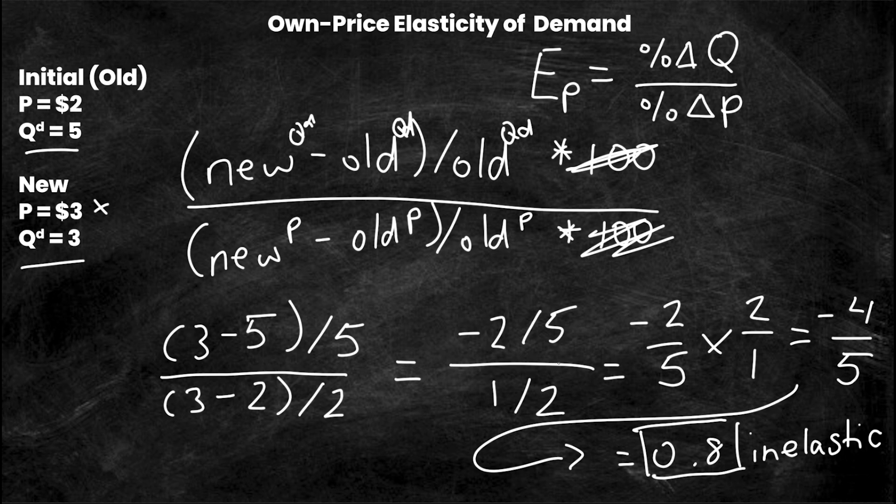Notice how important it is to be writing the new and old quantity demanded correctly. What I'm going to show you is what would happen if we were going from P equals three dollars and quantity demanded equals three to P equals two dollars and QD equals five. So what if this was the old and this was the new? That's what we're going to explore because it will actually give you a different answer.